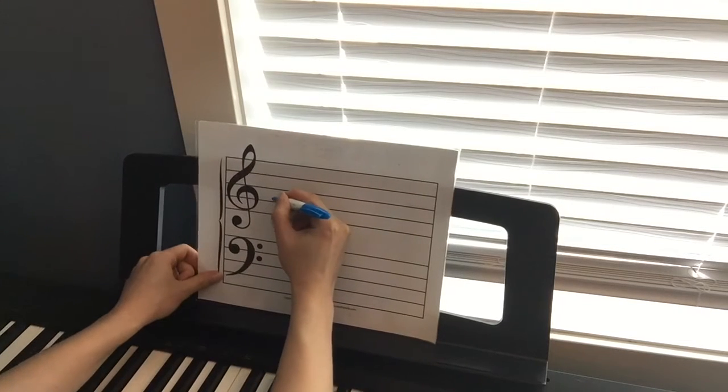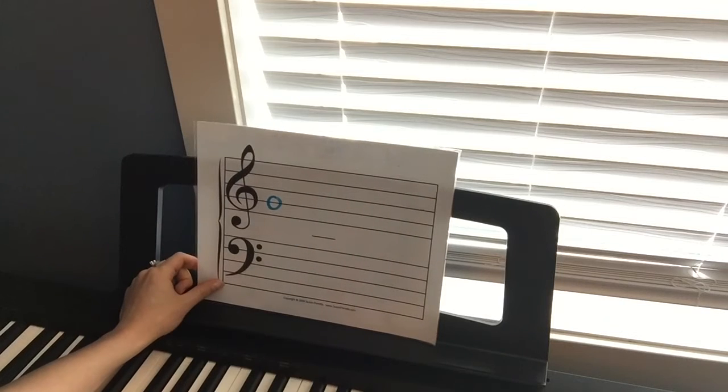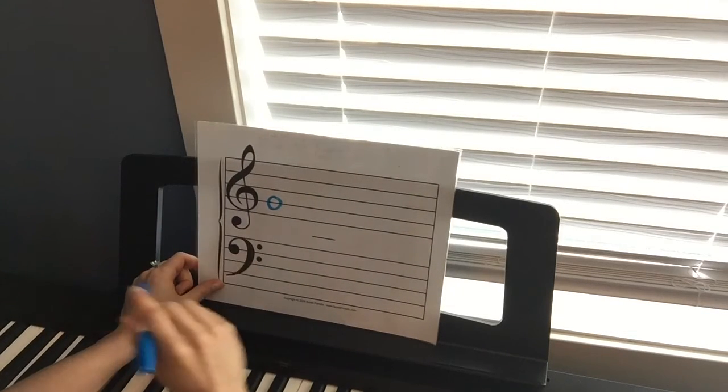I'm going to start by writing one on treble G. Now I'm just going to use whole notes or circles for my melody. I'm not going to add any rhythm, but you can if you want. So there's my treble G note.